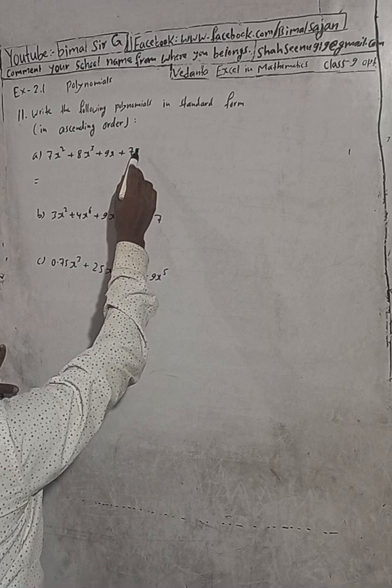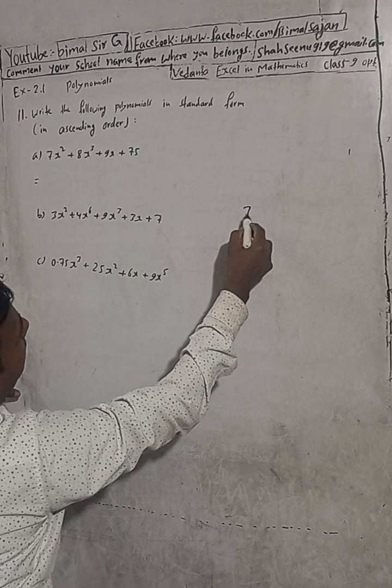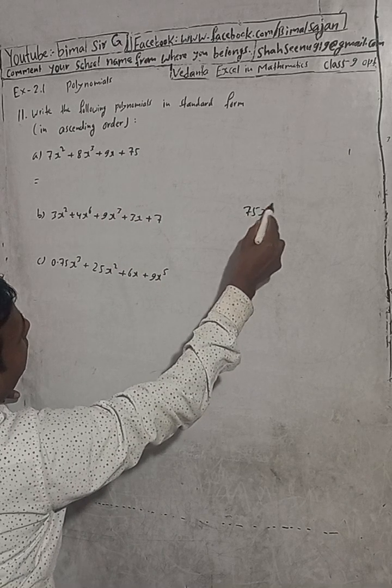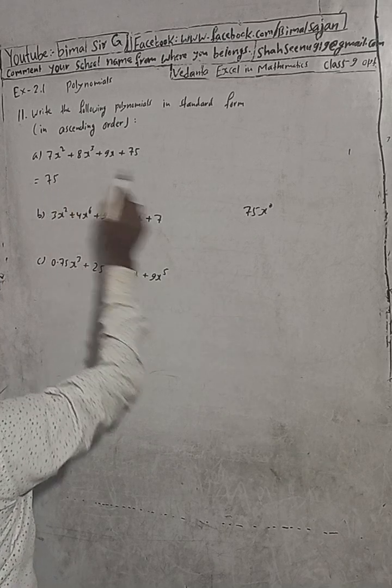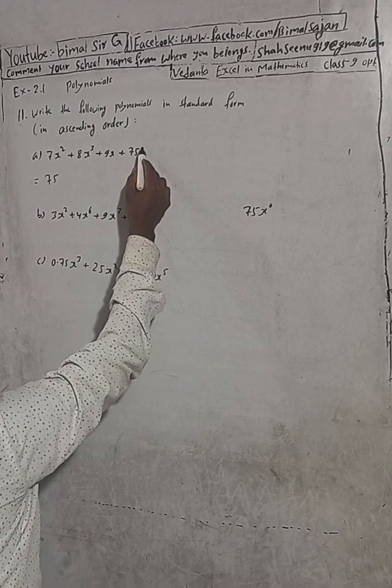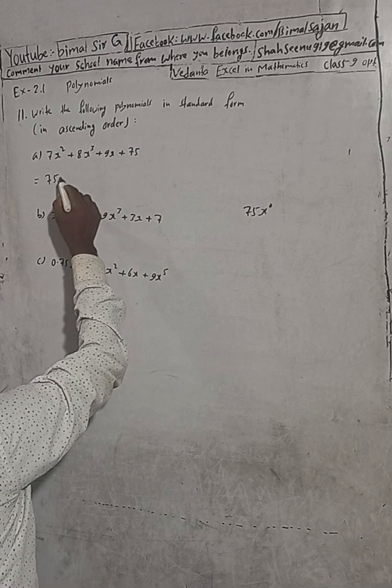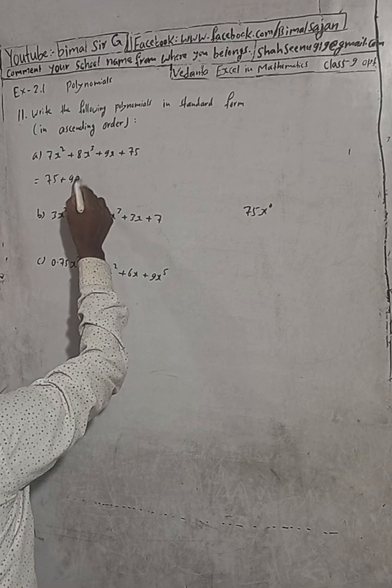This constant is 75, where the x power is 0. So we write 75. After that, x power is 0 and after this x power is 1, so plus 9x.